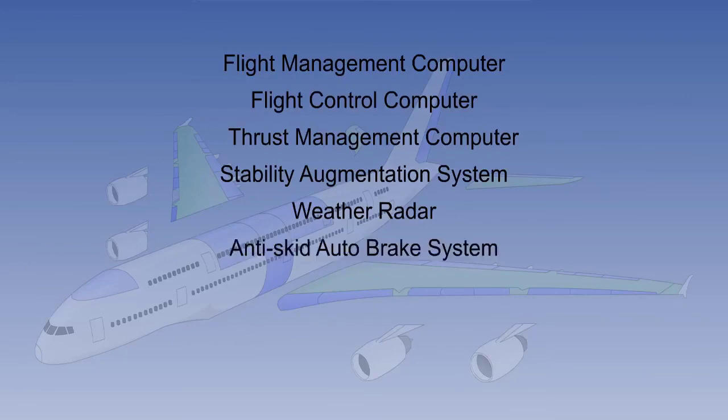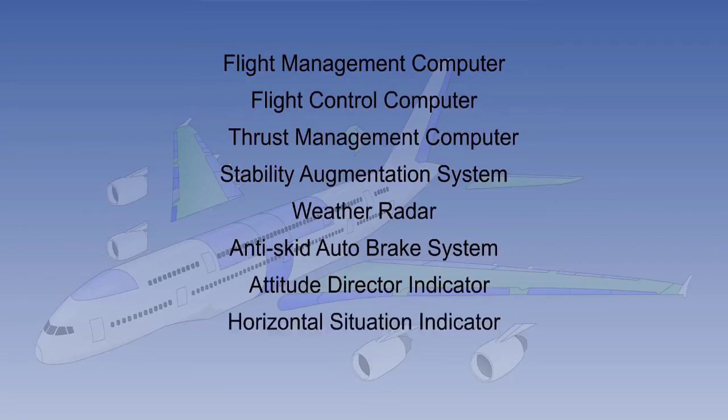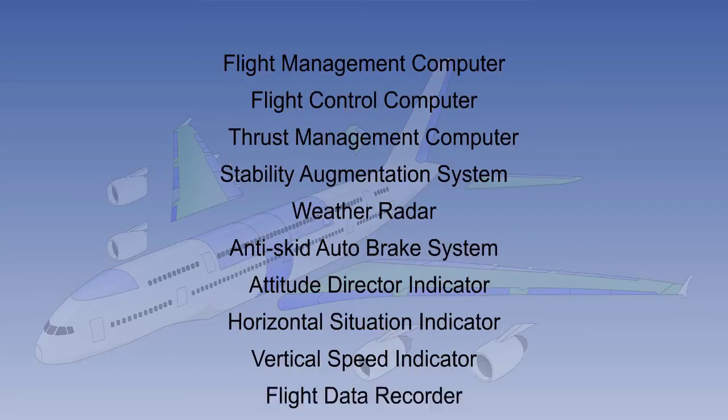Ground speed is fed to the anti-skid auto-brake systems. And attitude information is used in the attitude director indicator, and navigation information in the horizontal situation indicator. The vertical speed indicator is rate-aided from the vertical accelerometer. This is sometimes called an inertial lead unit. And all latitude, acceleration, velocity, and position information is, of course, continuously fed to the flight data recorder.